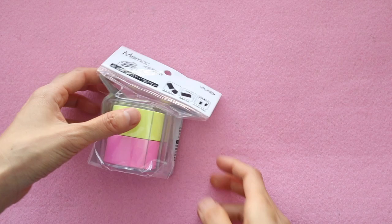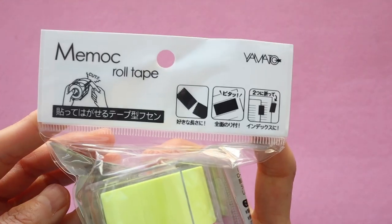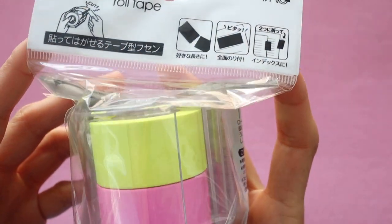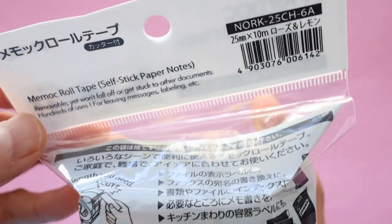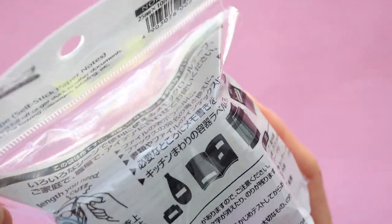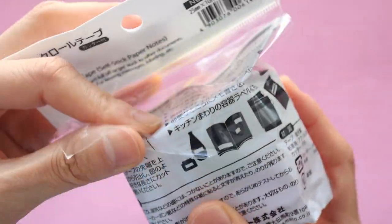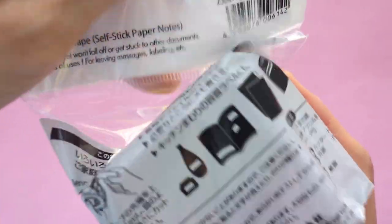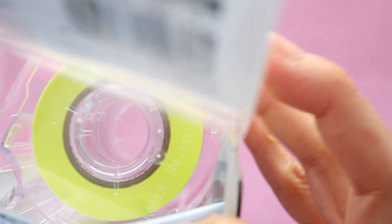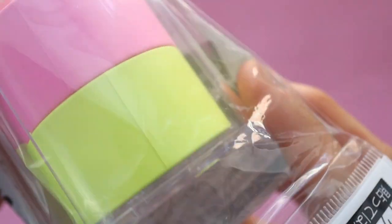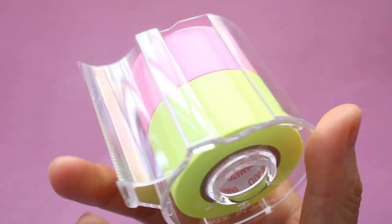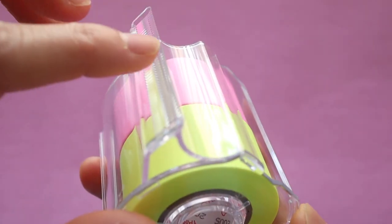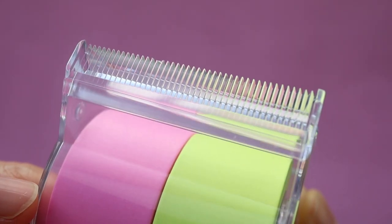The next item is this Memok roll tape. This is not really a tape. It's actually more of a post-it note in the form of a tape. So the way that it's set up, it looks like it's a regular tape dispenser.